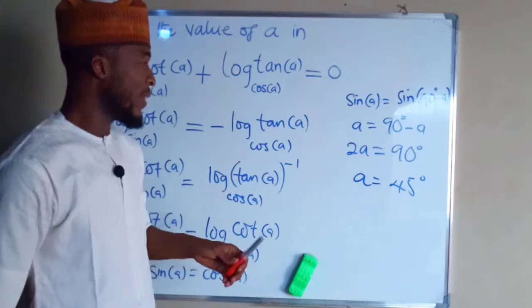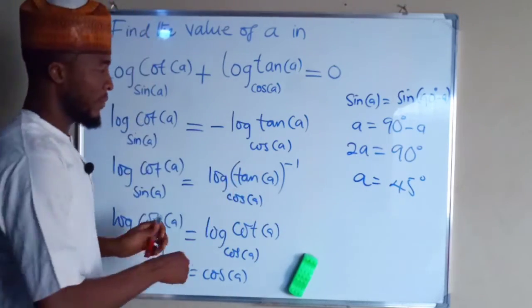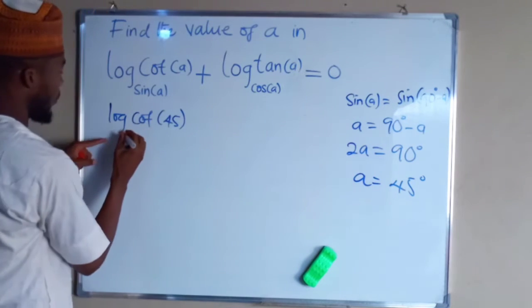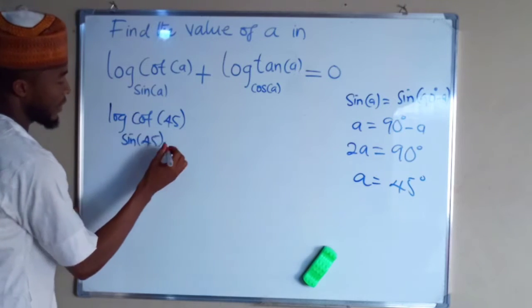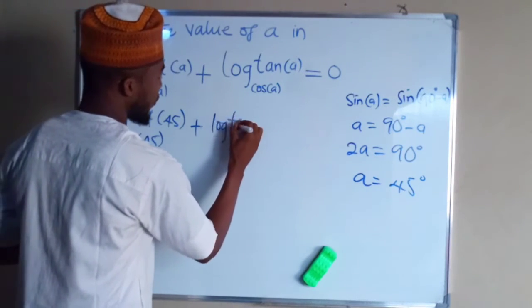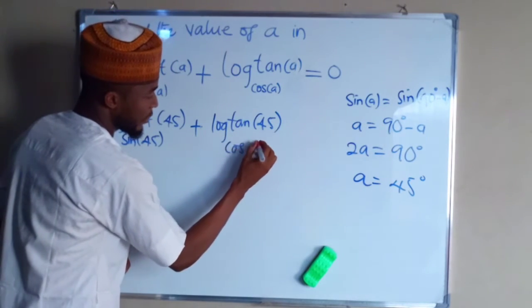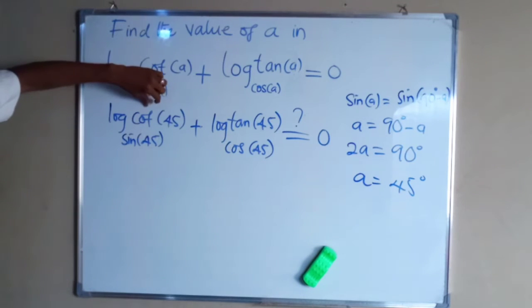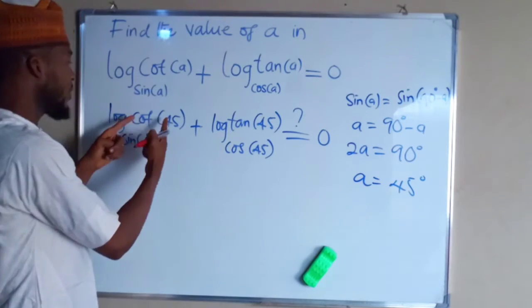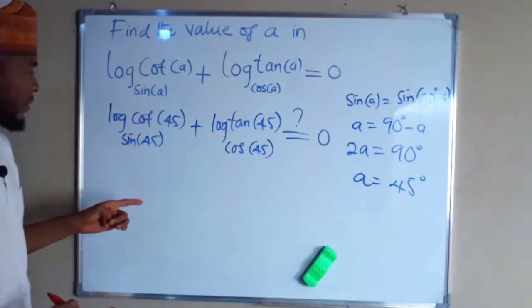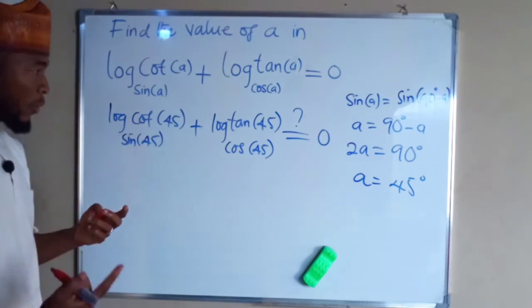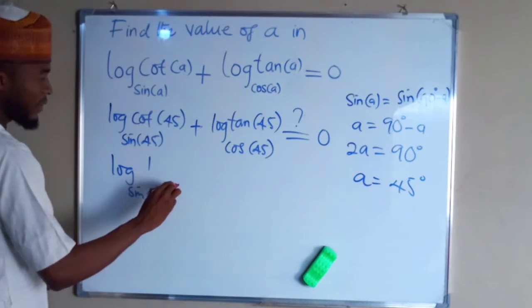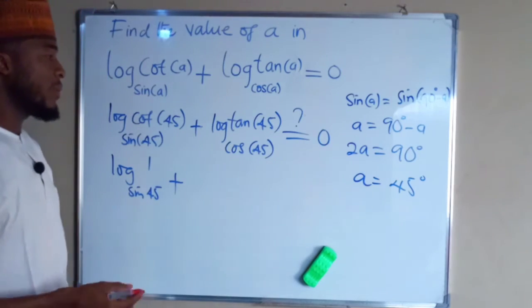To verify whether A is equal to 45 degrees, we check the value of A in the main equation. We have log of cotangent 45 with the base of sine 45, plus log of tangent 45 base cos 45. If this equals 0, then A is confirmed. We know that cotangent of 45 equals 1, because cotangent 45 equals cos 45 divided by sine 45, and sine 45 equals cos 45. So cotangent 45 equals 1. Also, tan 45 equals sine 45 divided by cos 45.